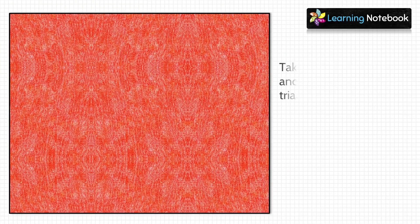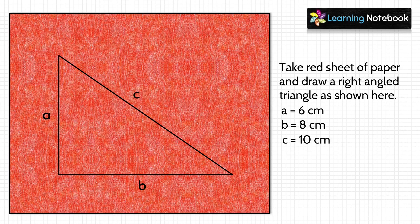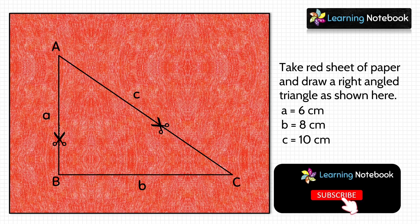In the first step, take a red sheet of paper and draw a right-angled triangle on it. You can take a = 6 cm, b = 8 cm and c = 10 cm. Then cut this triangle with the help of a pair of scissors.